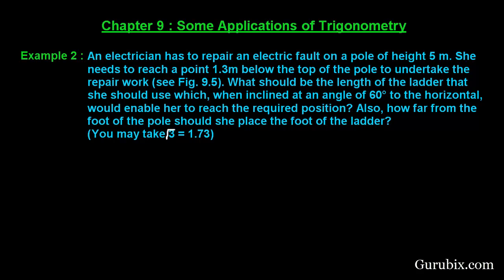Welcome friends, let us solve example number 2 of chapter 9. The example says an electrician has to repair an electric fault on a pole of height 5 meters. She needs to reach a point 1.3 meters below the top of the pole to undertake the repair work. What should be the length of the ladder that she should use which, when inclined at an angle of 60 degrees to the horizontal, would enable her to reach the required position? Also, how far from the foot of the pole should she place the foot of the ladder?